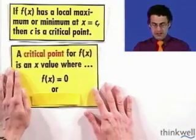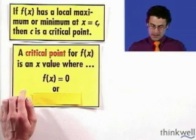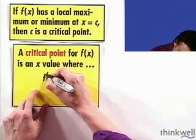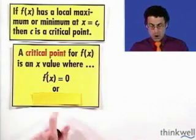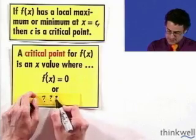Well, remember that a critical point is a point where the function either, well, the derivative is 0, f prime of x is 0 there, or do you remember what the other thing is? I'll put a little question marks here for now. Let's see if we can come back to it.